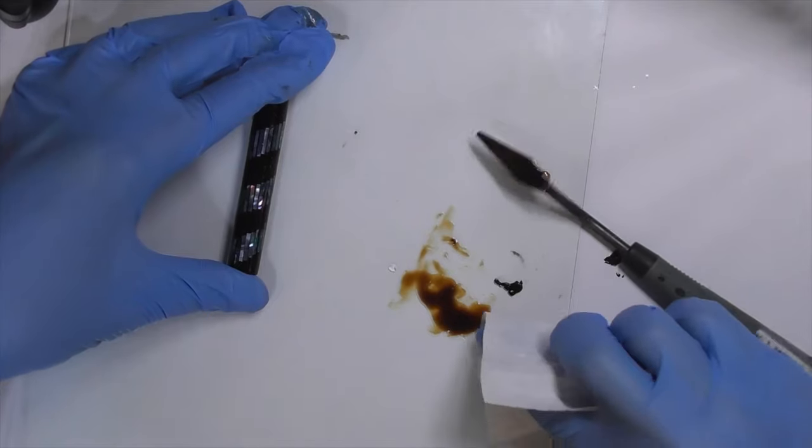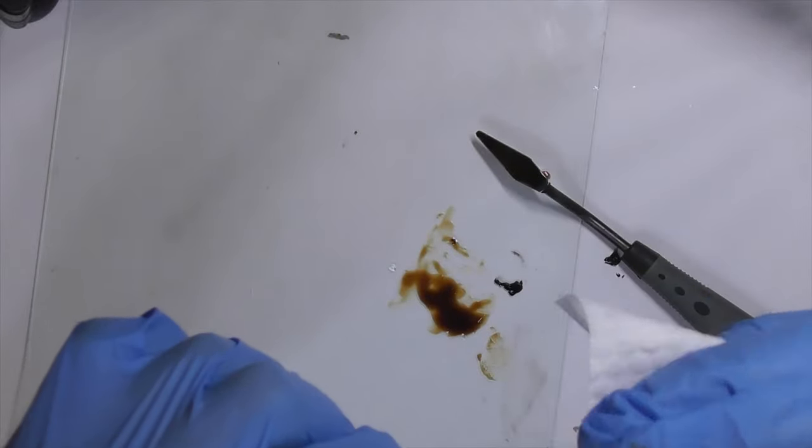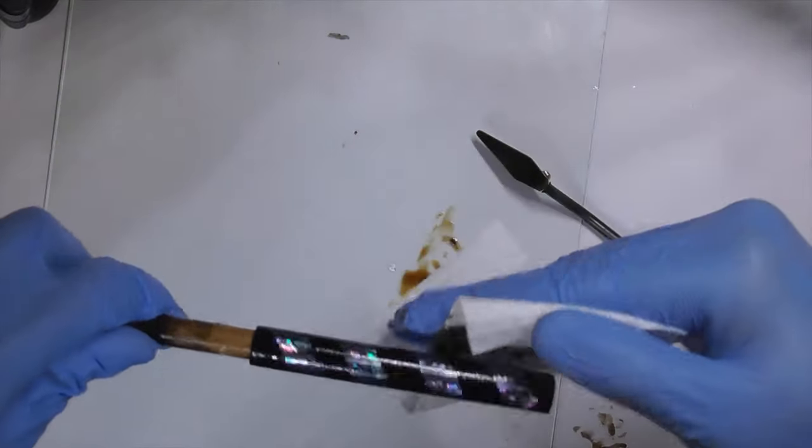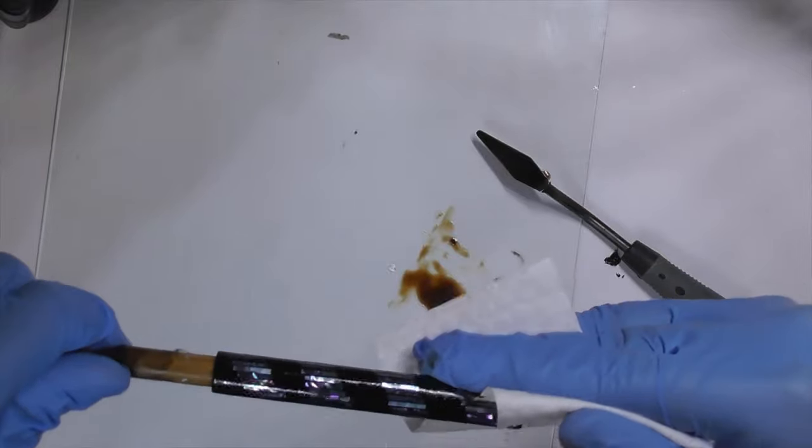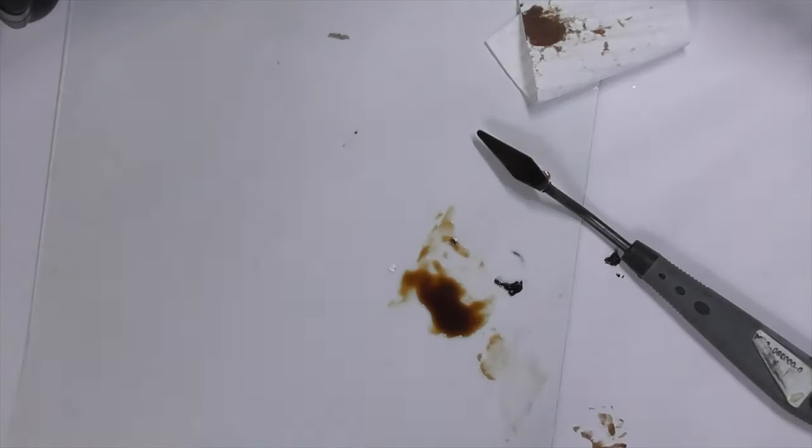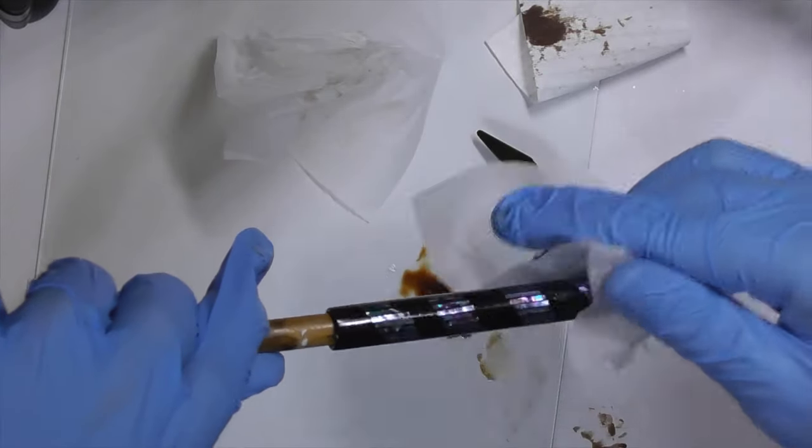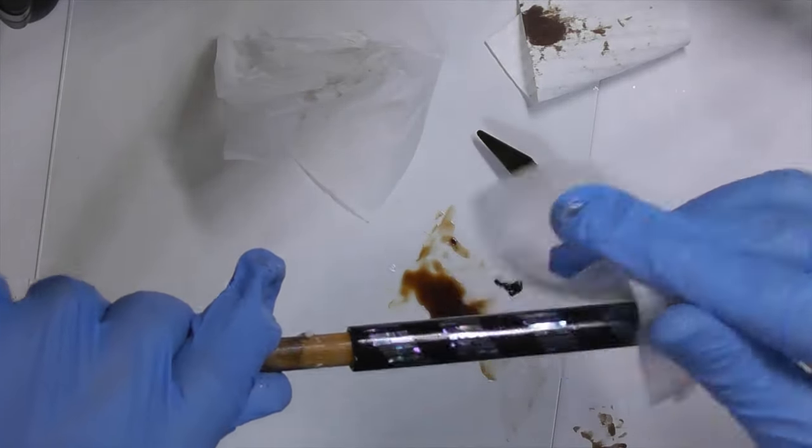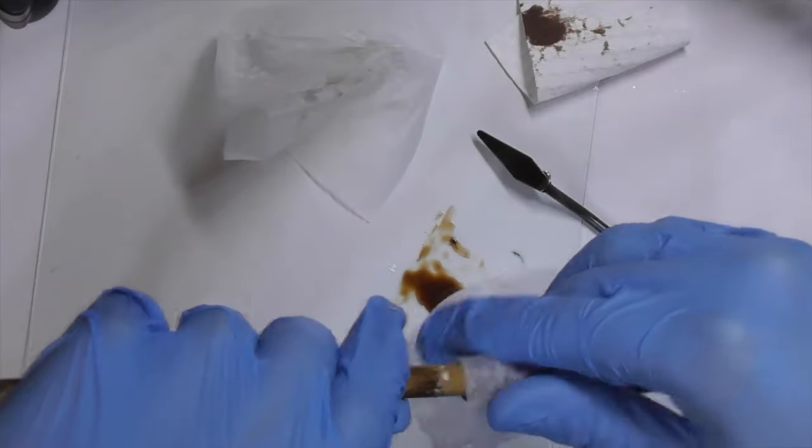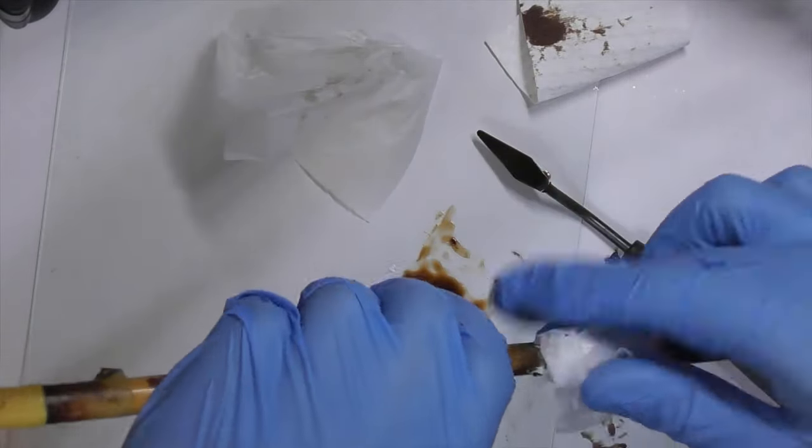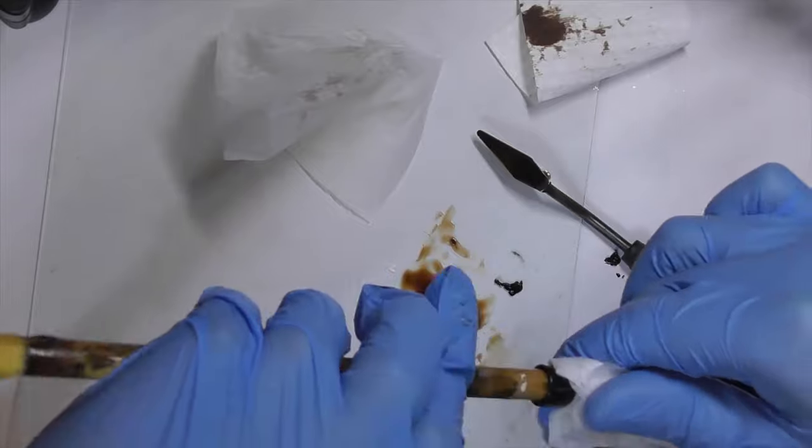Apply Zou Shoei Urushi on the barrel. Note that I'm using a tapping motion to avoid removing the silver powder. Remove excessive Urushi with a low lint tissue. Let it cure.